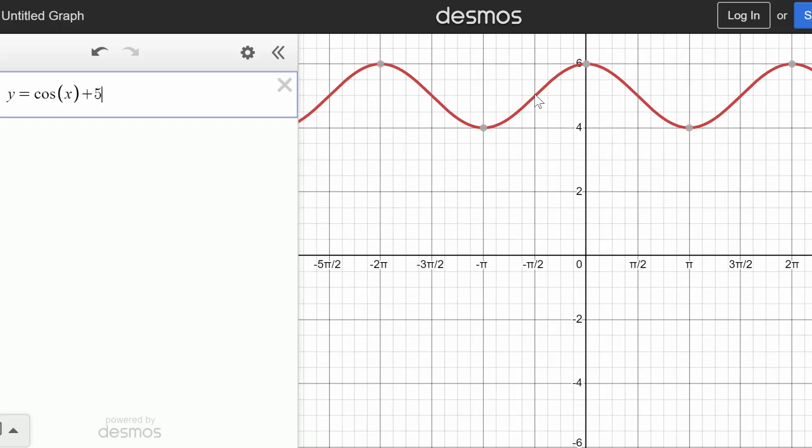We now notice that the midline would be in the middle of the minimum and maximum. And since the minimum's at four, the maximum's at six, the midline, it's hard to get an exact value, but will be somewhere around five. You can see the y value was the second value there.